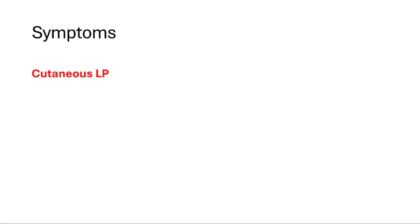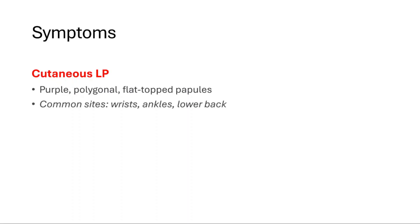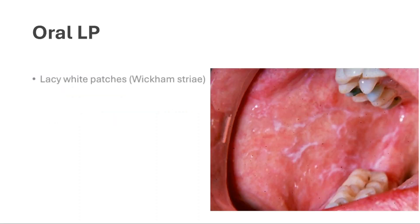Symptoms depend on the type. Cutaneous lichen planus presents with purple, polygonal, flat-topped papules; common sites are the wrist, ankles, and lower back, and itching is very common. Oral lichen planus presents with lacy white patches called Wickham's striae, and painful erosions or ulcers.